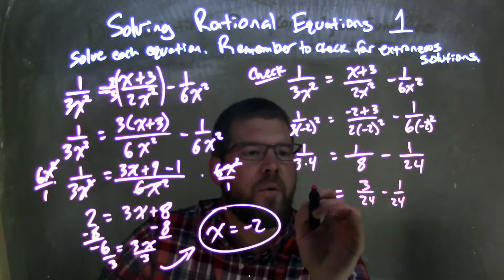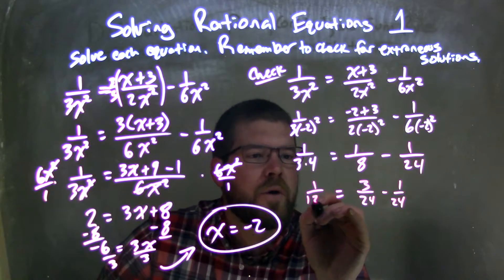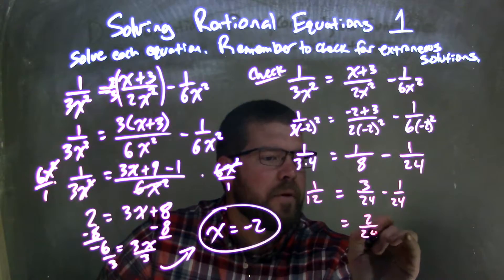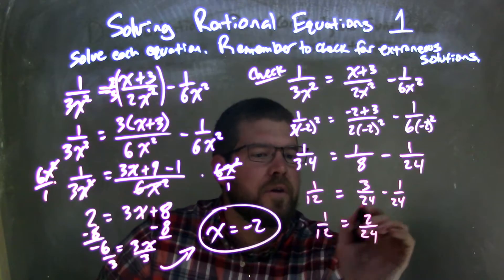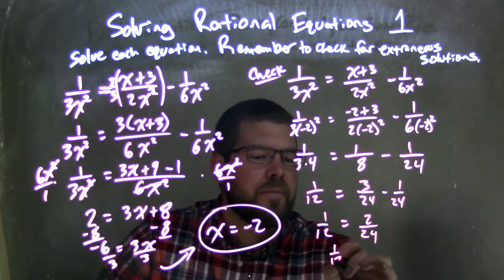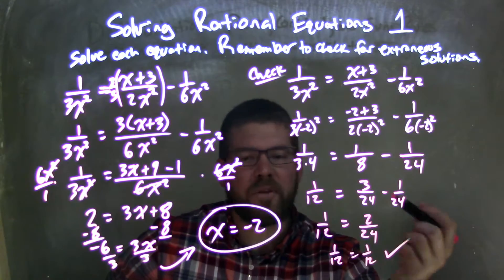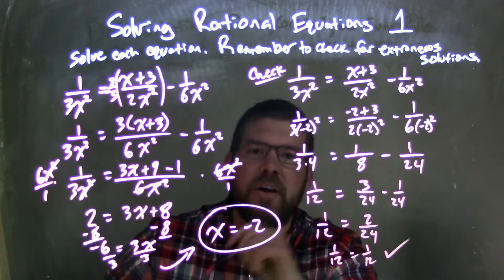So I have now 1 over 3 times 4, which is 12. Subtract them here: 3 minus 1 is 2, so we have 2 over 24. We're going to combine the two fractions, 1 over 12, and 2 divided by 24 is 1 over 12. And there we have it. Left and right are equal. Fantastic. Confirming that x equals negative 2.